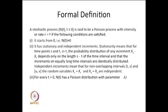Formally, we define the Poisson process as follows. A stochastic process N(t), t ≥ 0, is said to be a Poisson process with intensity or rate λ > 0 if the following conditions are satisfied. First condition: it starts from 0, that is N(0) = 0. Second condition: the increments are stationary and independent.